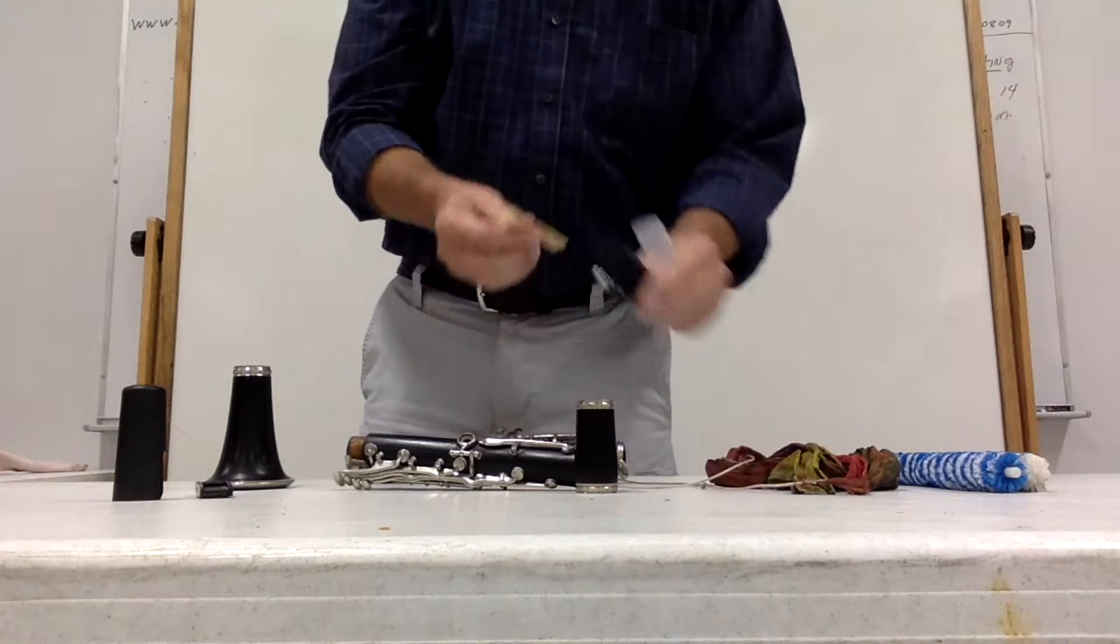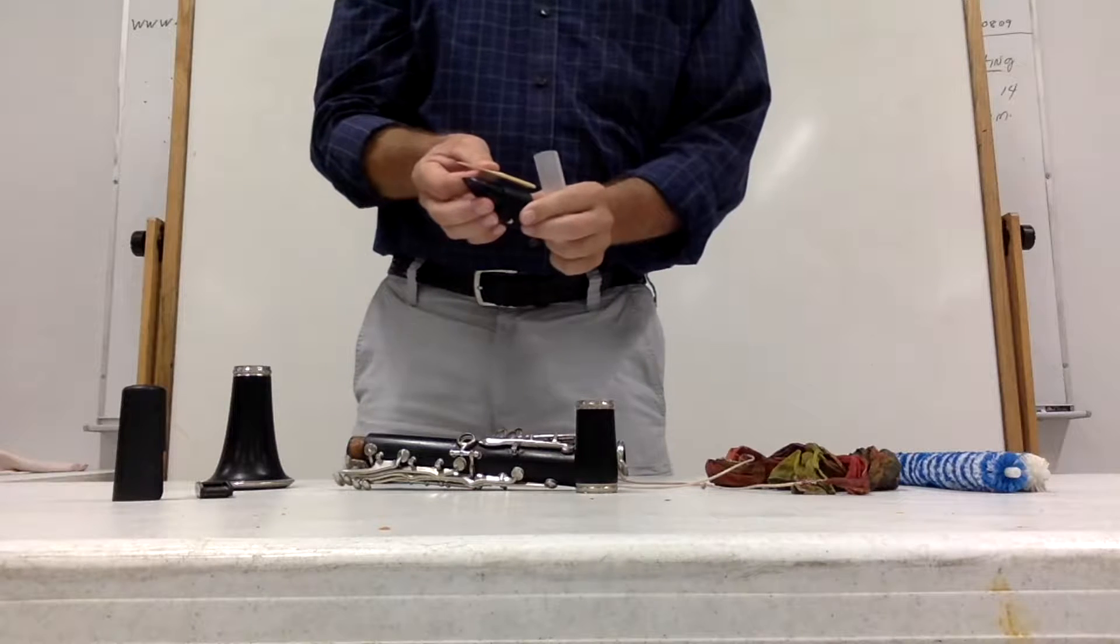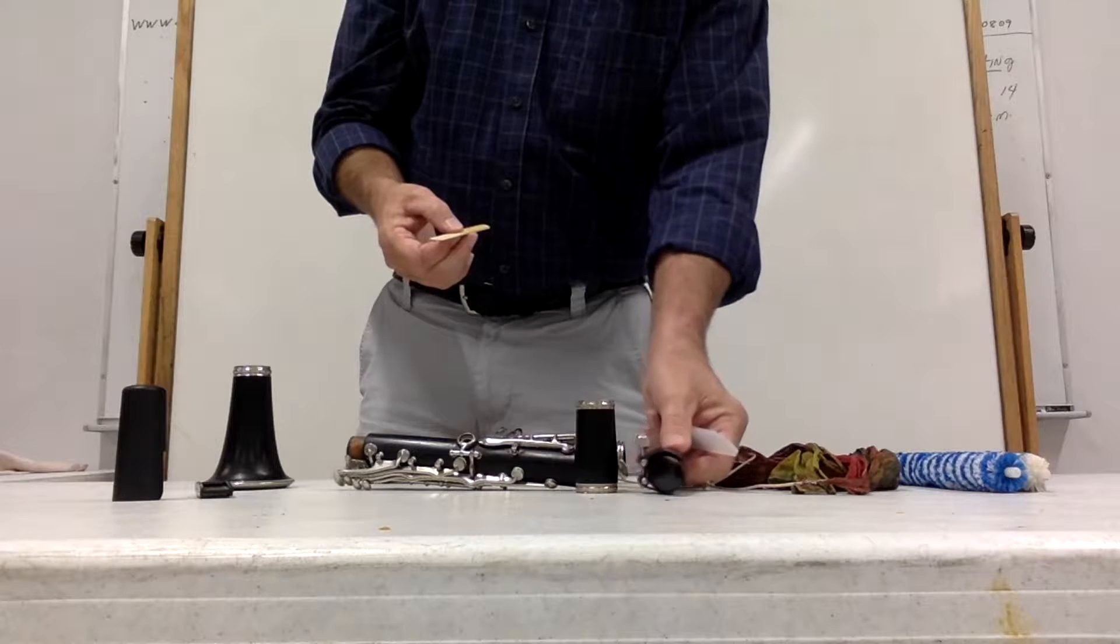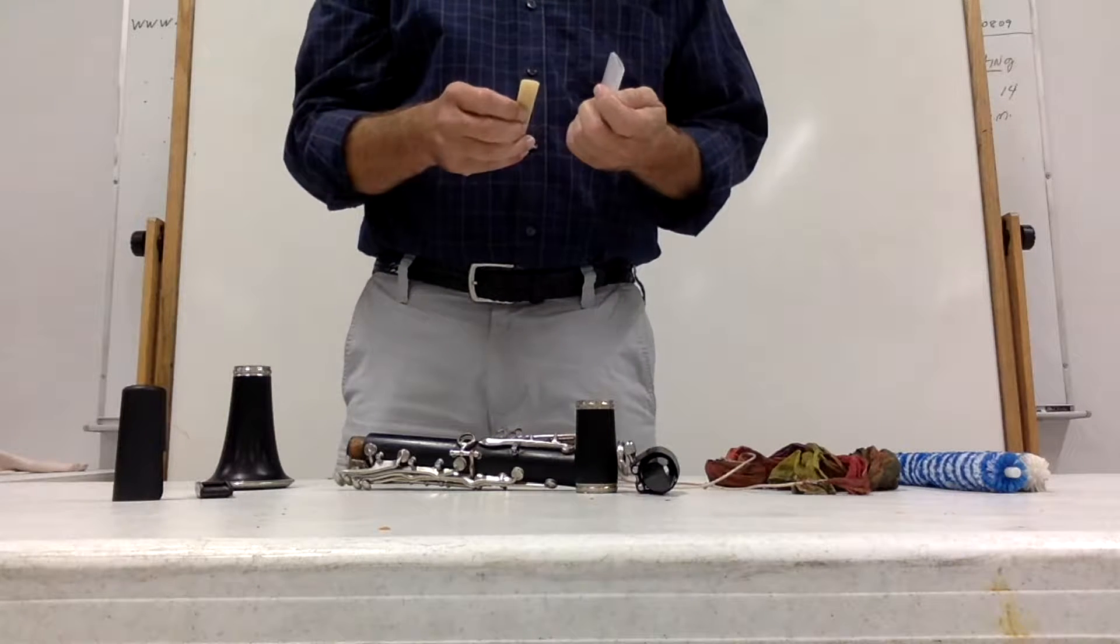Do not leave the reed on the mouthpiece. As it dries it will warp its wood. So you need to put it in something that will hold it still as it dries.